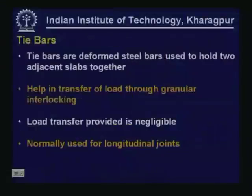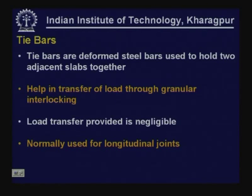The main function of a tie bar is to keep the two slabs together, thereby ensuring that load transfer is going to be possible through the granular interlocking mechanism. We are only trying to see that the two slabs do not get separated at this joint crack, thereby ensuring that granular interlocking is still going to be available and some load transfer mechanism will be maintained. The load transfer provided by the tie bars themselves is usually negligible and not generally taken into account. These are normally used for longitudinal joints.